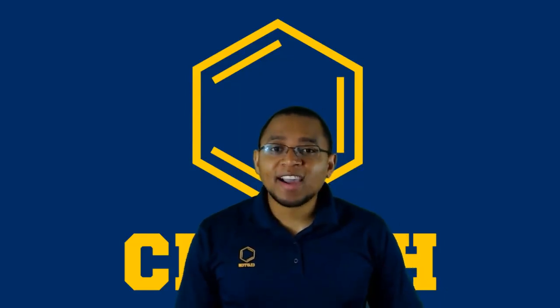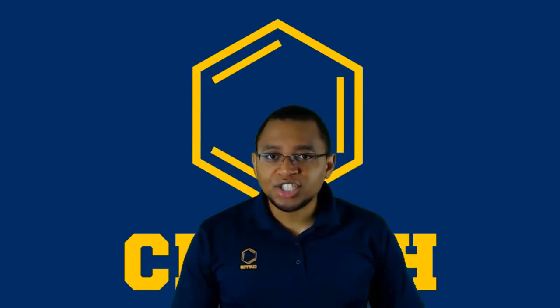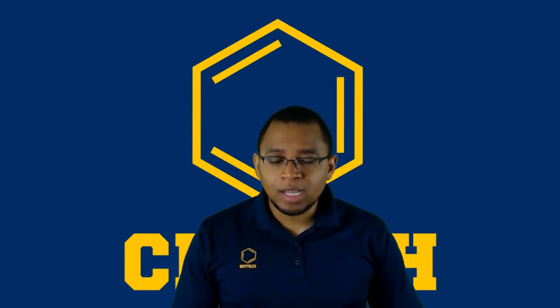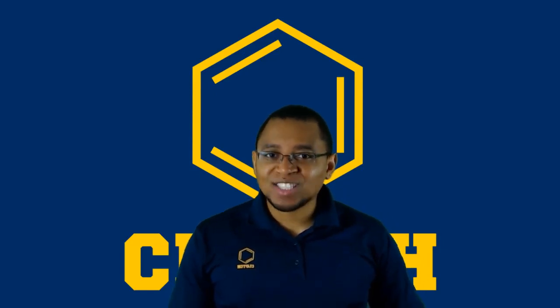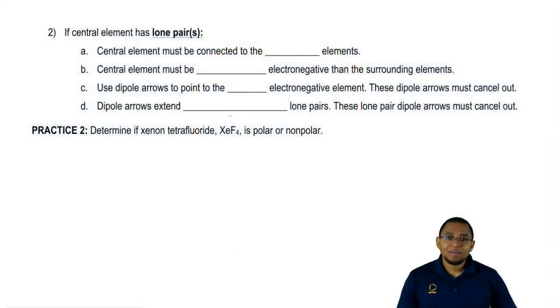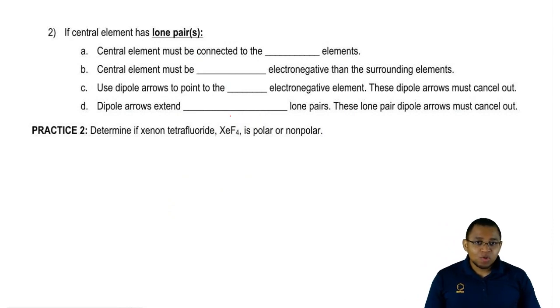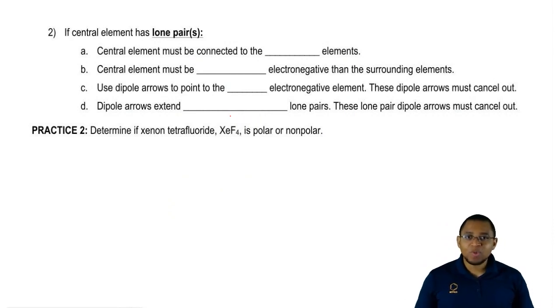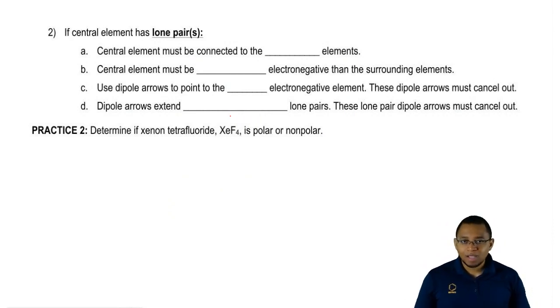Welcome back guys. We're now going to continue our discussion on polarity when our central element has lone pairs. It's more complex when our central element has lone pairs because we have more rules we have to follow. Let's take a look.